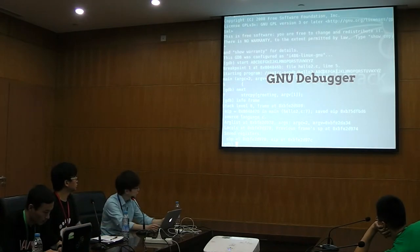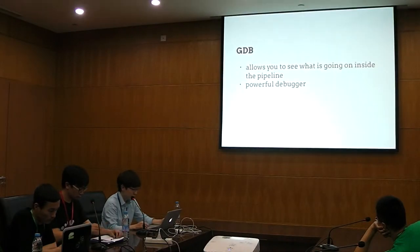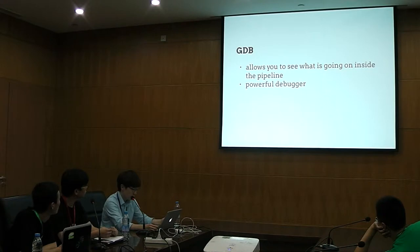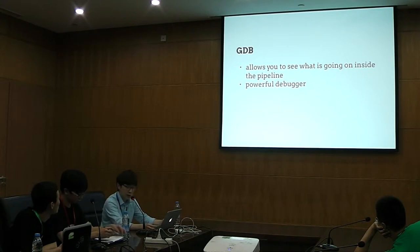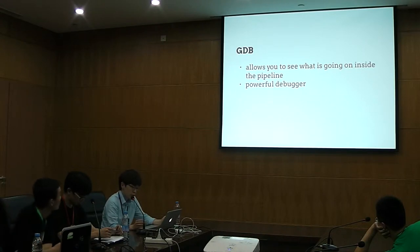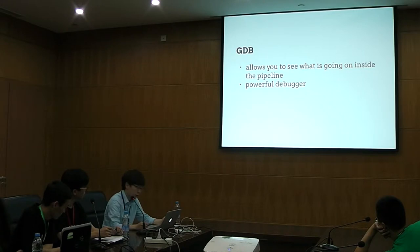The third is GDB. I think all of you are well-acquainted with it. It is very powerful and allows you to see what's going on inside the pipeline. You can start the pipeline specifying anything that might affect its behavior, make the pipeline stop on a specific condition, examine what has happened, and even change things in the pipeline to experiment with correcting one bug and learn about another.